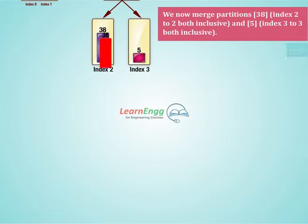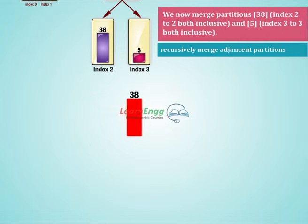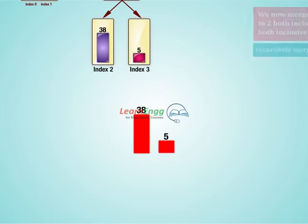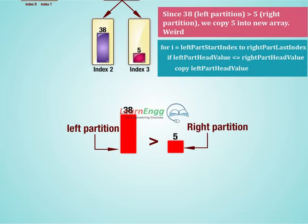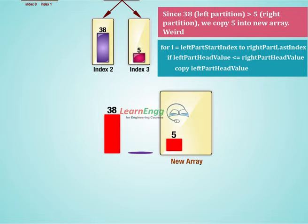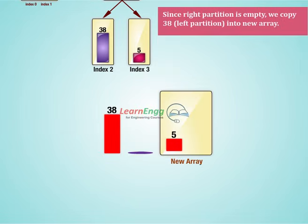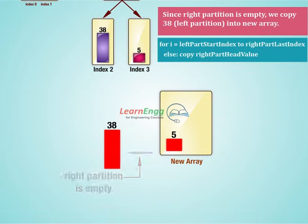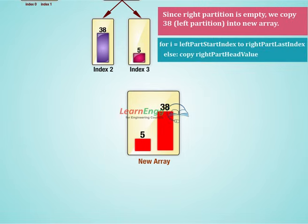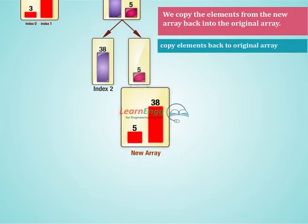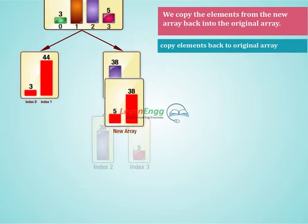We now merge partitions: array element 38 at index 2 to 2 (both inclusive) and array element 5 at index 3 to 3 (both inclusive). Since 38 (left partition) is greater than 5 (right partition), we copy 5 into the new array. Since the right partition is now empty, we copy 38 from the left partition into the new array. We copy the elements from the new array back into the original array.